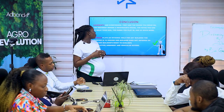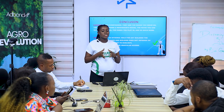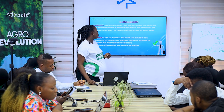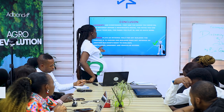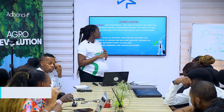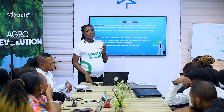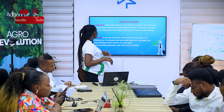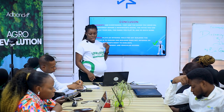For setback, it plays an integral role for any building. The purpose is to ensure one building does not infringe on another building's right to sunlight, ventilation, and vehicular access. So when you have a setback, it is very important because of all these roles it plays. Whenever we explain to people why we have to wait until we have a layout, a planning road network, and the rights of setback, we are trying to bring all of these into play so that we have a proper scatter planning.